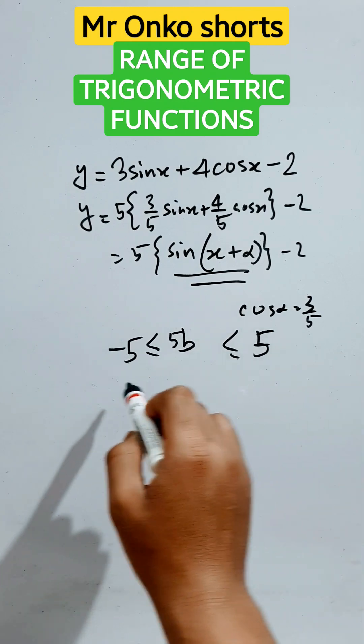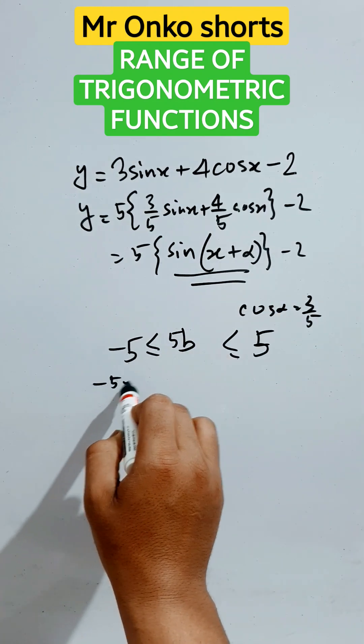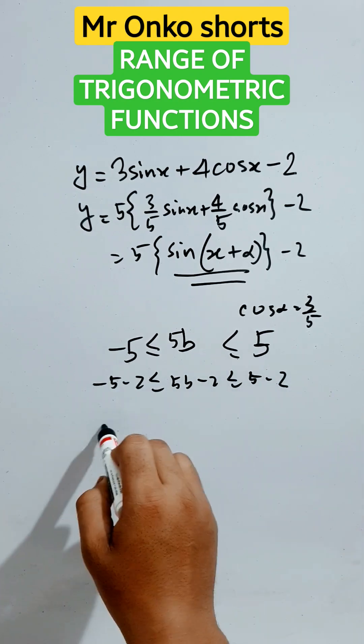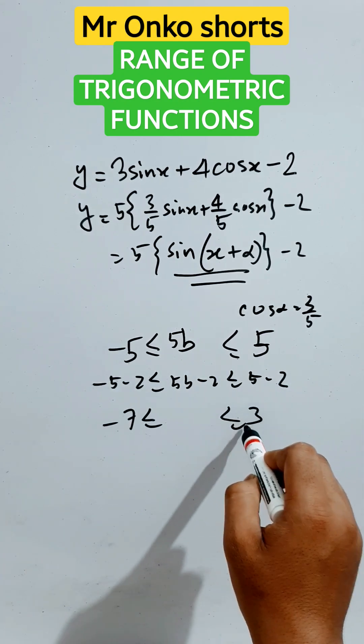Now minus two in both parts, so it will be like this. So minus seven to plus three, this is the range.